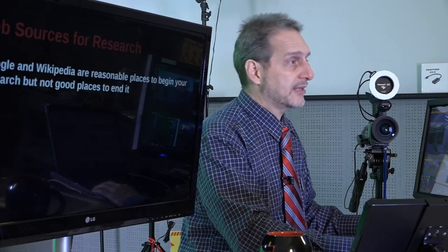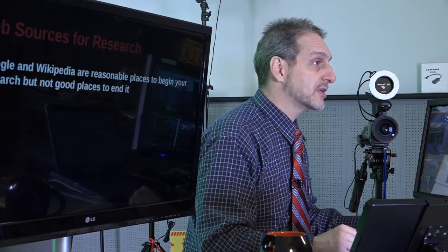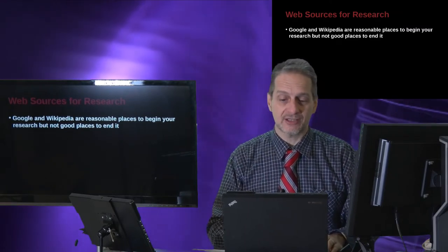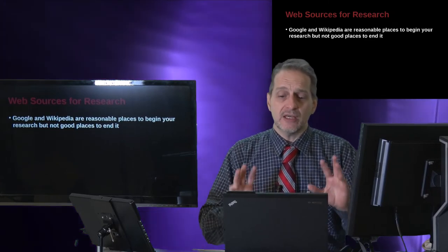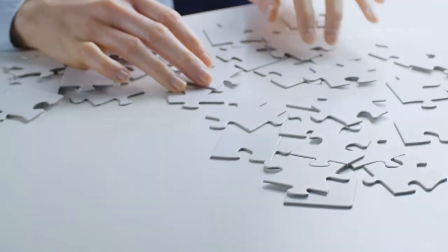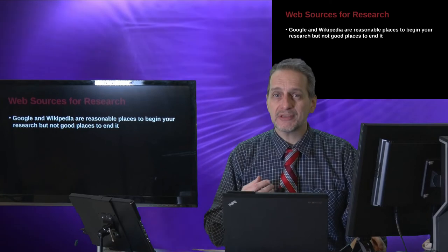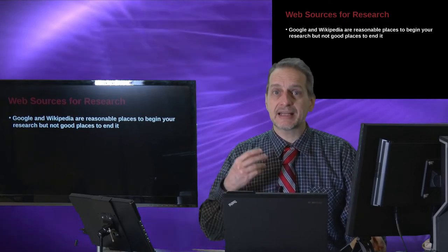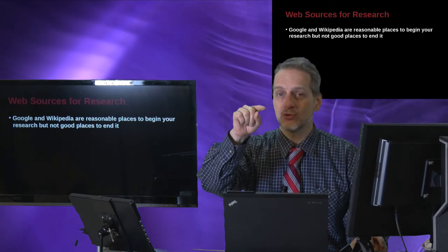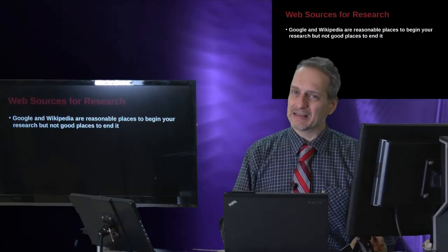Now let's begin with the details of making references and getting information. The difficult question teachers have with students is using the Internet. The Internet is a great source of information, but one of its biggest weaknesses is that information is often not complete or detailed enough. More often than not, the biggest problem is it's secondhand — secondary information, not primary source material. You're reading someone who wrote about what they read on another web page somewhere.